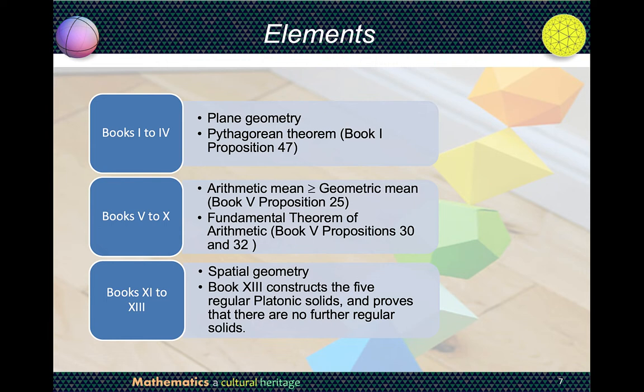So what are these five Platonic solids? They are the tetrahedron, cube, octahedron, dodecahedron, as well as icosahedron.